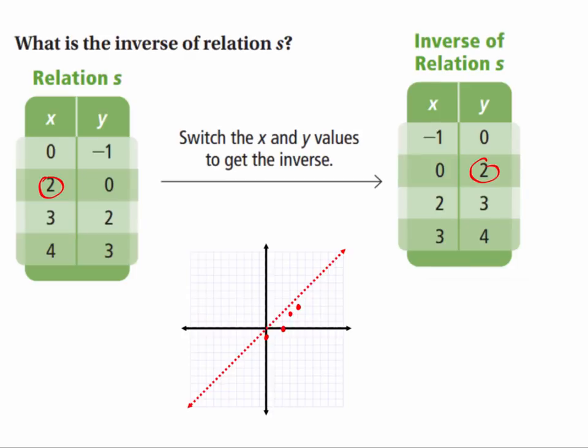Now, let me switch my pen colors here. Let me do my relation in green. So the relation is negative one, zero. You can see that corresponds, that reflects across this line y equals x of the original point, which is zero, negative one. Now, zero, two is going to be right here. And you see, again, it reflects across the line y equals x.